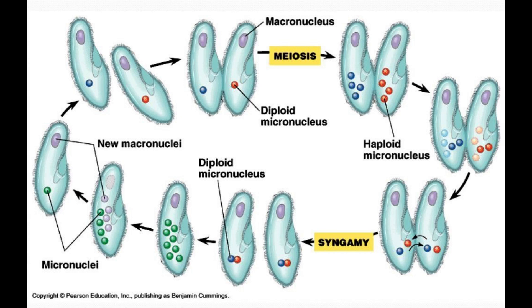Next, the micronuclei undergo meiosis, resulting in haploid nuclei, which are then swapped with the paired mate. The new haploid nucleus combines with the original one to form a diploid micronucleus. The pair then separates, and over time the micronucleus divides, amplifies, and ultimately replaces the old macronucleus. In this way, an individual paramecium is changing its genotype in a single generation, similar to the way that sexual reproduction combines genotypes in the next generation.